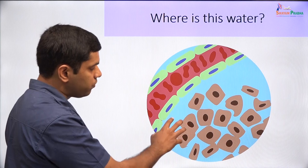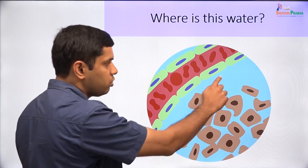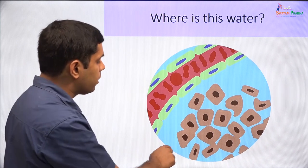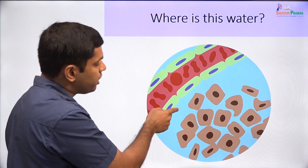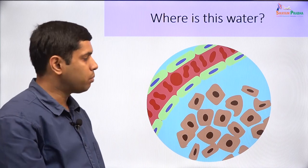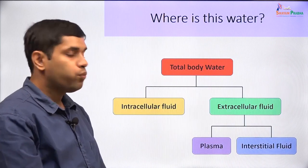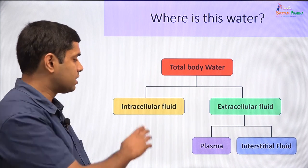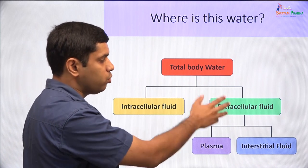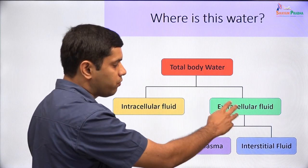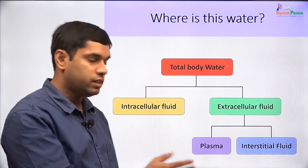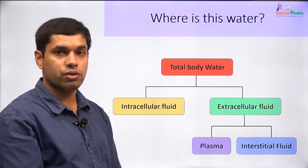The extracellular fluid that is just around the cells is called the interstitial fluid, and the part of the extracellular fluid that is inside the blood vessels — the fluid part of the blood — is called plasma. So if we were to classify body fluids, we could classify them into the intracellular fluid, which is within the cells, and the extracellular fluid, which is outside the cells. The extracellular fluid is divided into two compartments: interstitial fluid and plasma.